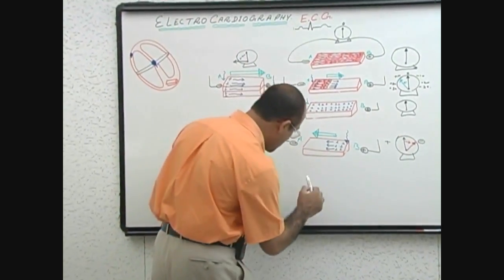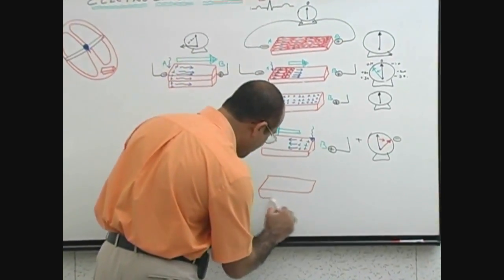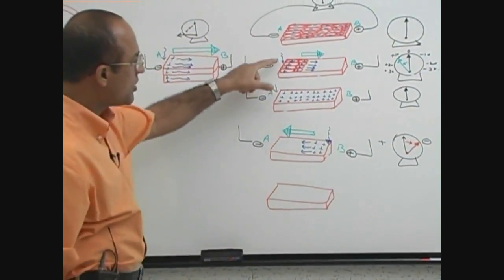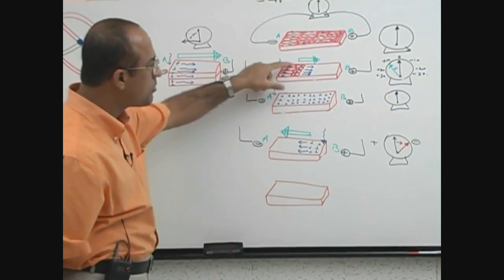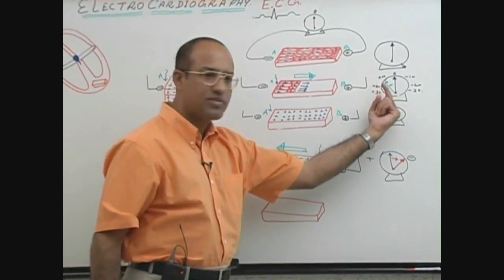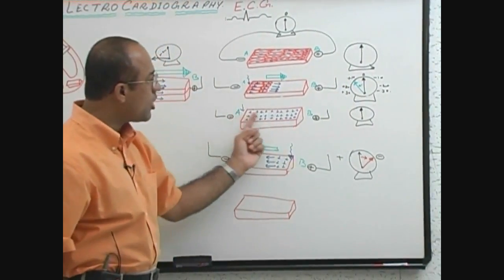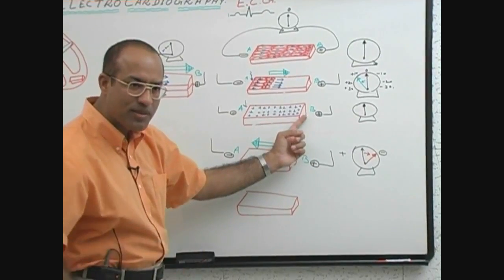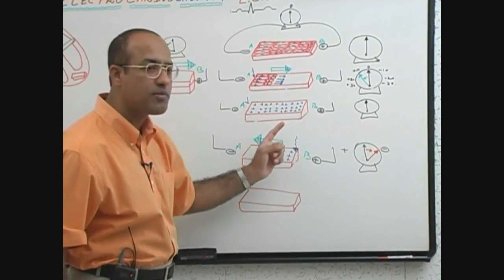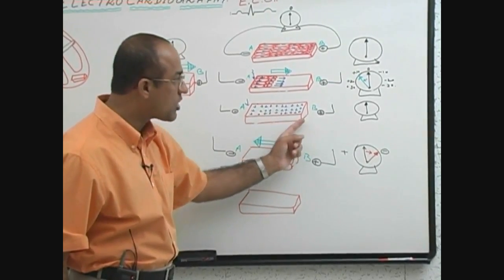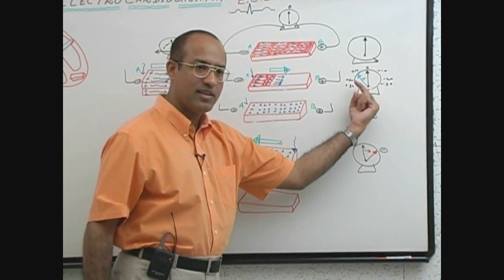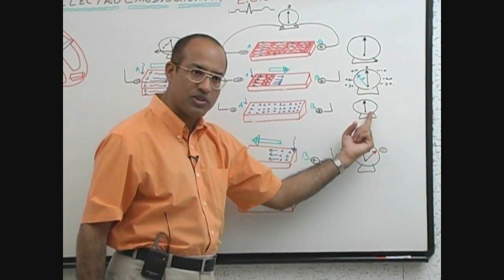Another experiment just to see how much you understand. When a piece of myocardium was initially stimulated and it got depolarized and then depolarization was traveling, the needle deflected to the positive side. Eventually all the myocardium was completely depolarized. When it was completely depolarized, there was no current and the needle, which was electropositive, went back to the neutral position.